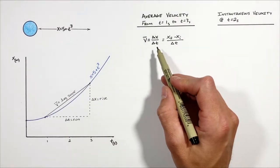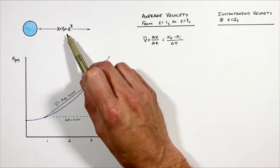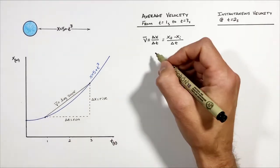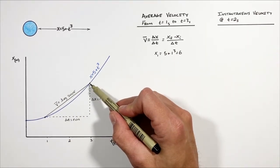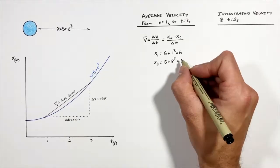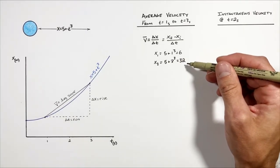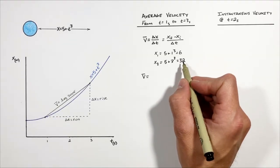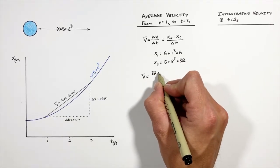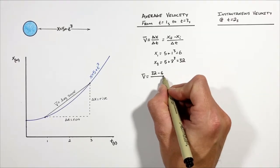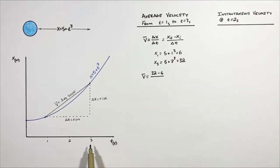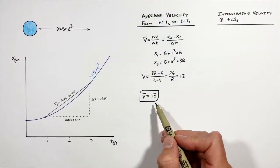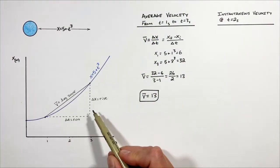In order to actually calculate this, we need to evaluate the position equation at these two different points in time — first at a time of one second, and then at a time of three seconds — to find where the particle is at each moment. Plugging these two positions into our equation, we get the average velocity equals our final position of 32 minus our initial position of 6, divided by the elapsed time of three minus one. So the average velocity from one second to three seconds is 13.